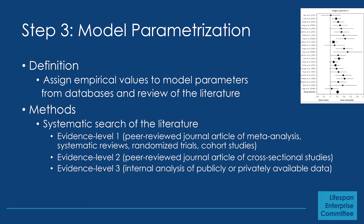Then we parametrize the model, which means assigning real values to the variables. To do that, we need to conduct a systematic search of the literature. We can use peer-reviewed sources — meta-analyses, systematic reviews, randomized trials, cohort studies — as different levels of evidence. We can also use cross-sectional studies when we don't have higher-level data, or even analyze internal data that are private or public, which we consider a lower level of evidence since it may not yet be published.